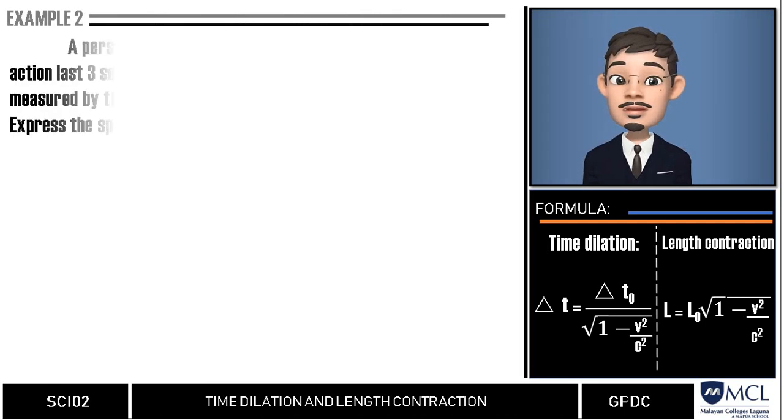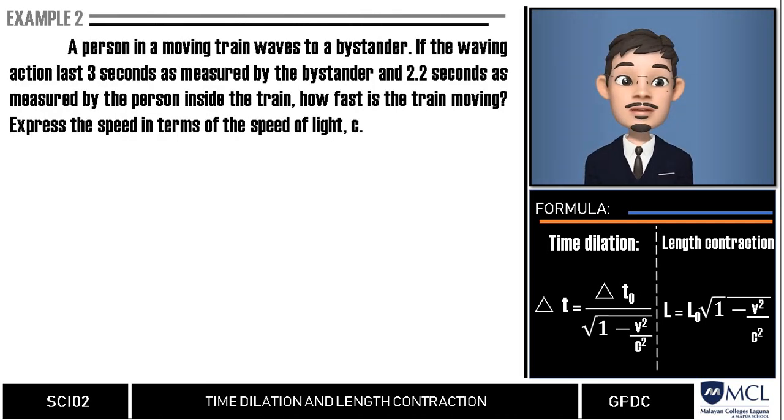A person in a moving train waves to a bystander. If the waving action lasts 3 seconds as measured by the bystander and 2.2 seconds as measured by the person inside the train, how fast is the train moving? Express the speed in terms of the speed of light c.